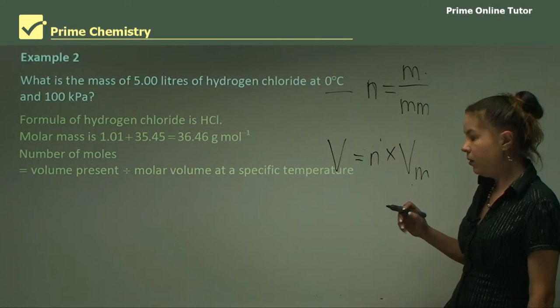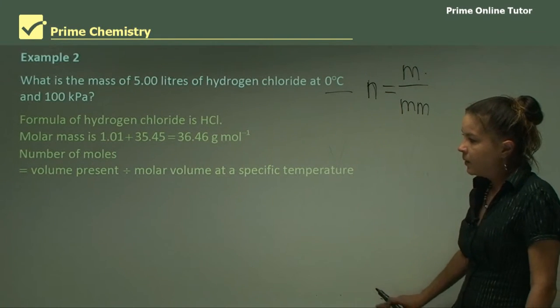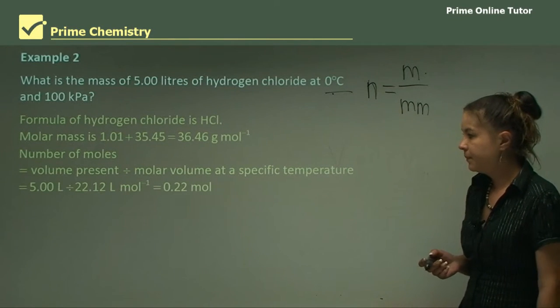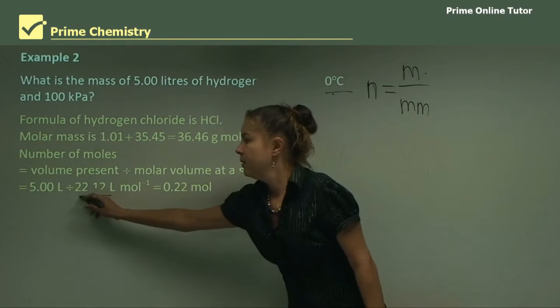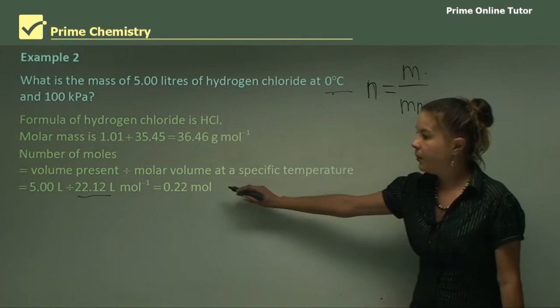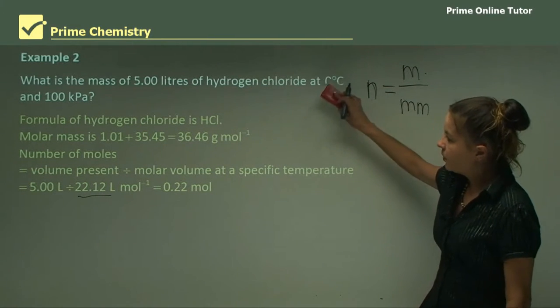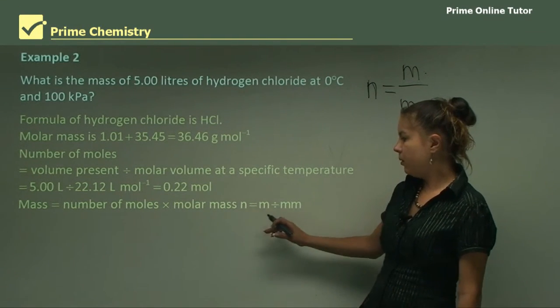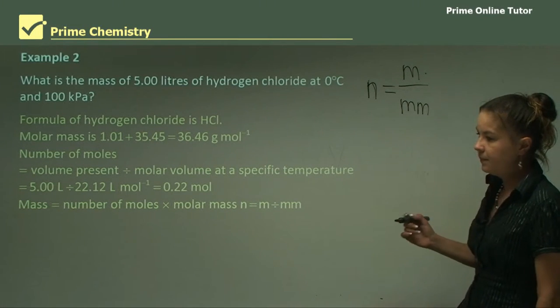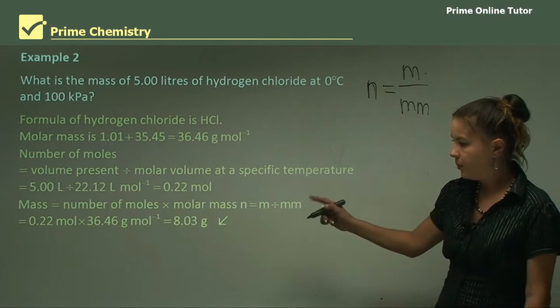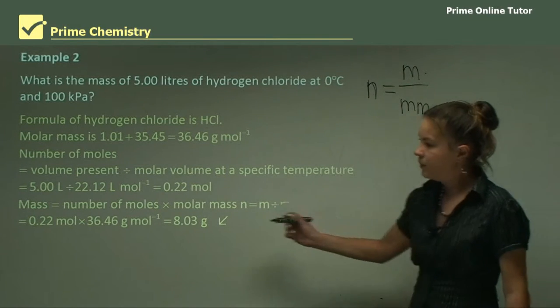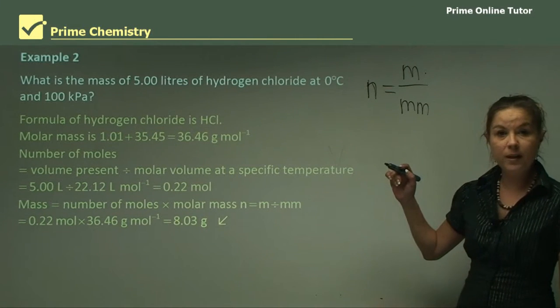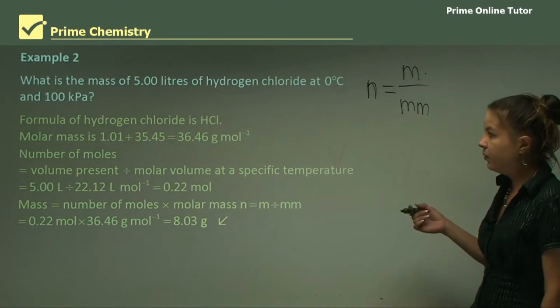Now let's look at the number of moles. So the moles will be the volume present divided by the molar volume at a specific temperature, which is zero, which is five liters divided by our molar volume, 22.12, and we get 0.22 mole. So now we need to move on and find the mass here. The mass equals the number of moles times the molar mass. So that's just a rearrangement of that equation. So we know that we've got 0.22 mole, and we times it by the molar mass, which we found earlier, 36.46, and we get 8.03 grams. So that's how we link these three equations for gases. So now I'll move on to a few questions.